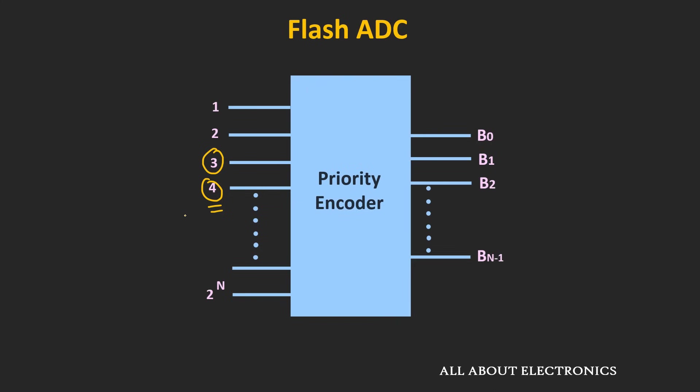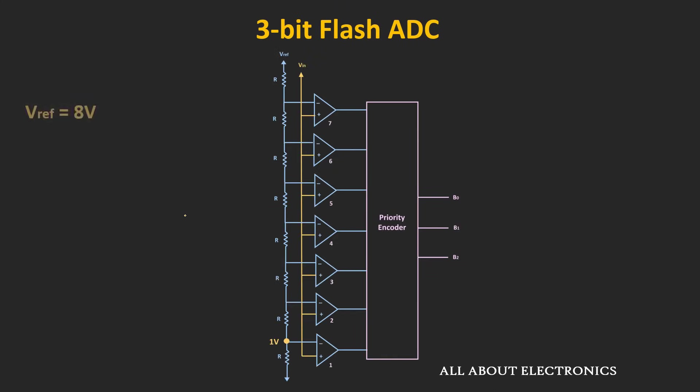To further understand the working of this 3-bit Flash ADC, let's assume that the reference voltage is 8V and the input to this Flash ADC is equal to 3.3V. With this reference voltage of 8V, the value of V1, that is the reference voltage for the first comparator, will be equal to 8V multiplied by R divided by (R plus 7R), which is equal to 1V.